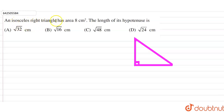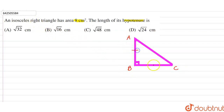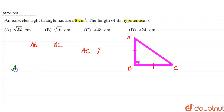Our question is: an isosceles right triangle has area 8 centimeter square. The length of its hypotenuse is? Let's say this is triangle ABC with right angle at B. An isosceles triangle means two sides are equal, so AB is equal to BC. We have to find the hypotenuse, that is AC.